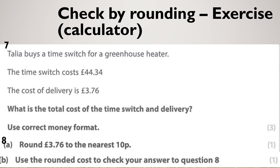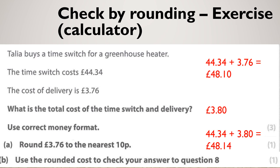Here's another example — pause the video and see if you can get all 5 marks. For 3 marks, hopefully you knew the Talia question was an addition and you got £48.10. Round £3.76 to the nearest 10 pence — because that's a 6, it's going to round to £3.80. Then use the rounded cost to check your answer: you do the exact same calculation again but with £3.80 instead of £3.76.